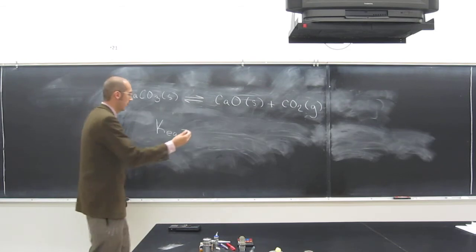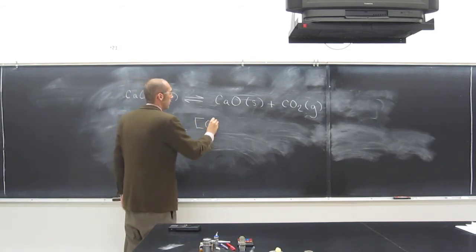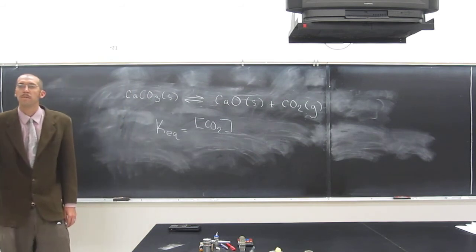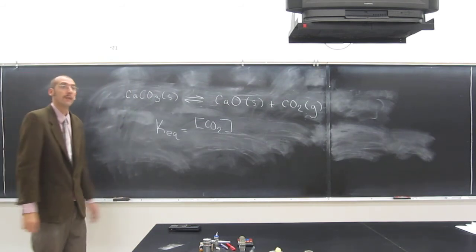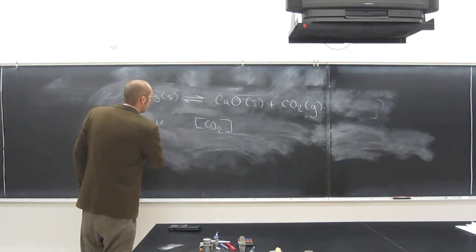CO2. Concentration of CO2 divided by what? Nothing. Nothing. That's it. So that's the equilibrium constant.